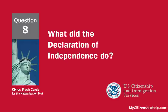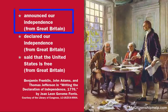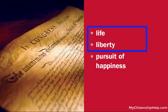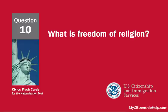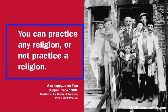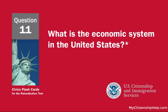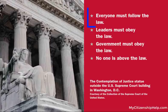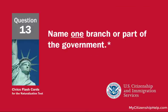What did the Declaration of Independence do? It announced our independence from Great Britain. What are two rights in the Declaration of Independence? Life and Liberty. What is freedom of religion? You can practice any religion, or not practice a religion. What is the rule of law? Everyone must follow the law.